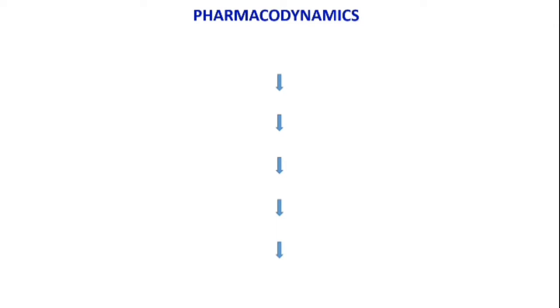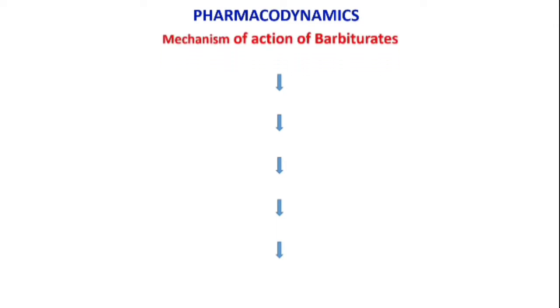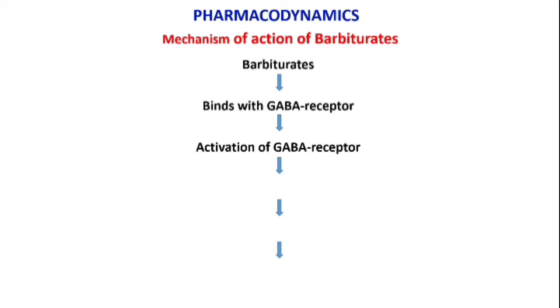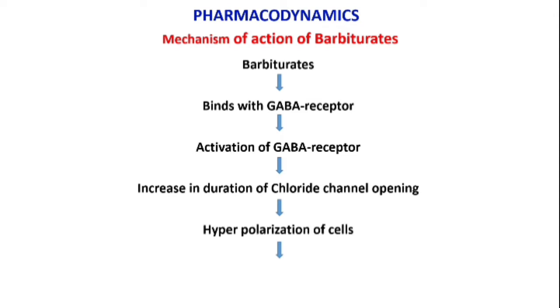Moving on to the pharmacodynamics of phenobarbital — here is the mechanism of barbiturates. Barbiturates bind with the GABA receptors, which leads to the activation of GABA receptors, increasing the duration of chloride channel opening, and thus results in hyperpolarization of the cell.